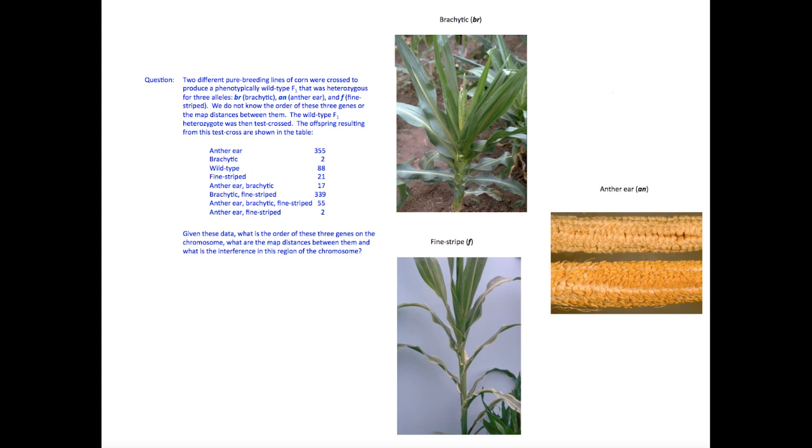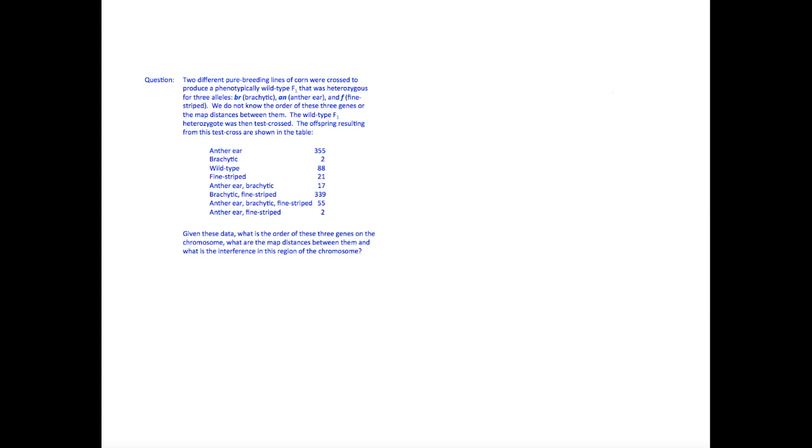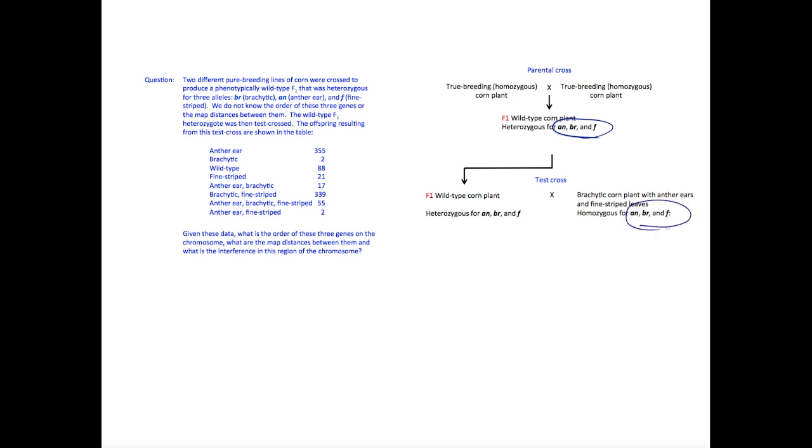Note that if the mutant trait is not mentioned in a phenotypic category, the plant must be wild-type for that trait. The general structure of a three-factor cross problem involves mating two homozygous parents to obtain an F1 triple heterozygote. In our case, the F1 is heterozygous for all three of the genes: AN, BR, and F. This wild-type F1 heterozygote was mated to a plant homozygous for all three mutant genes.